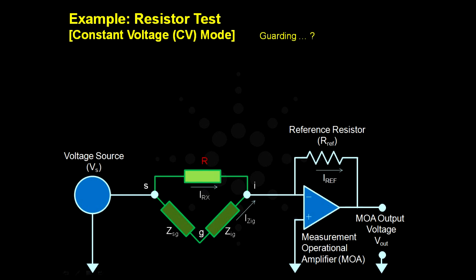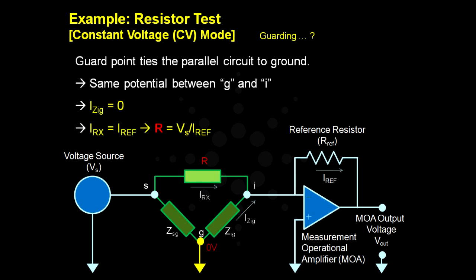We can achieve this by tying point G to ground. Since the negative input of the MOA is virtual ground, the positive input will also be. So if both point G and I are ground, there will be no potential difference between the two points and therefore no current IZIG.